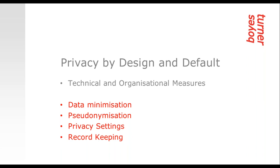Measures an organization can adopt to achieve privacy by design include training and awareness, and record-keeping. In terms of security measures, GDPR doesn't specify which measures you have to have in place - there is a risk-based approach taking into account the state of the art and the cost of implementation. Measures such as data minimization and pseudonymization are however specifically mentioned. Pseudonymized information is a privacy enhancing technique but it is still a form of personal data. Encryption is also a measure organizations should consider, and the ICO has handed down fines to organizations that have failed to encrypt the personal data they hold.